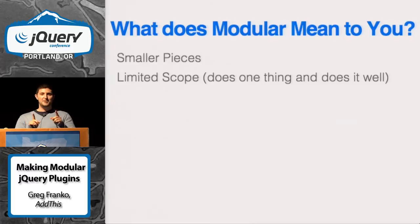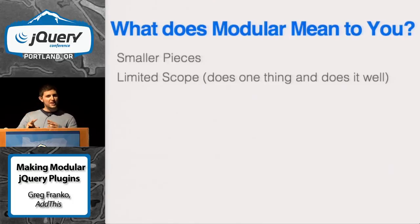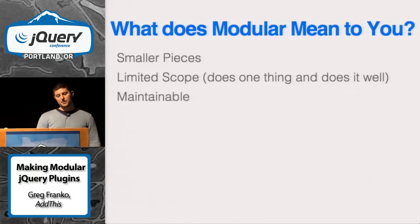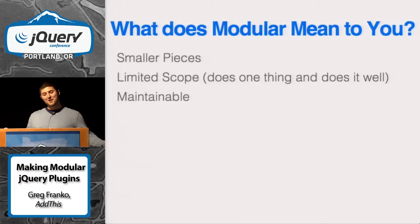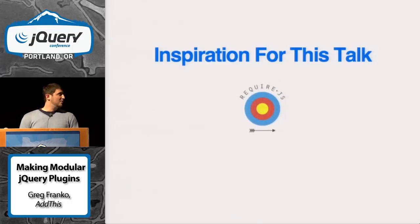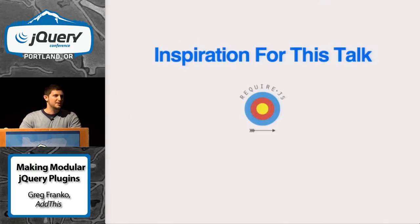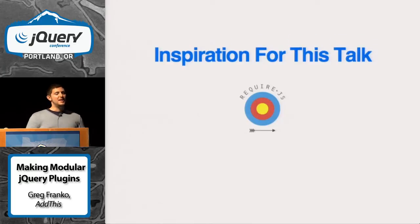If you have something pointing in all directions doing a bunch of different things, look at it architecturally and figure out how to split it up. We want things to be maintainable. The inspiration for this talk was RequireJS, though not the only one. Node.js uses CommonJS for their module format, so it's modules in general and code structure. RequireJS in particular made it easy to see how everything worked in the browser.